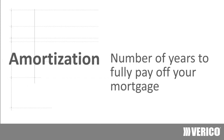Amortization refers to the actual number of years it will take to repay the mortgage in full. This is usually longer than the term of the mortgage. For instance, you may have a 5-year term amortized over 25 years.